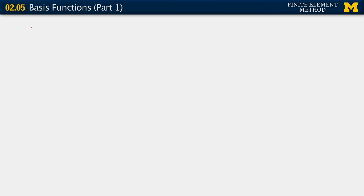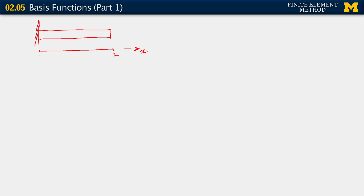We are going to continue with our development of the Galerkin weak form for this one-dimensional linear elliptic PDE. Let's begin by recalling where we were. If this is our domain of interest, this is the physical problem we are looking at — we have this bar, our x-axis, positions 0 and L, and this is our domain omega.